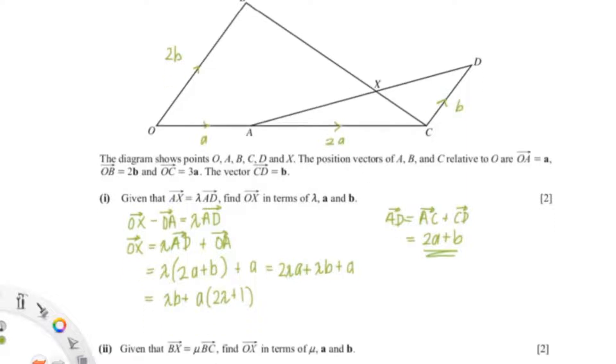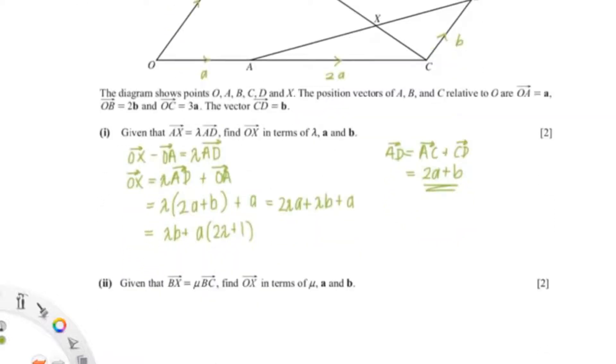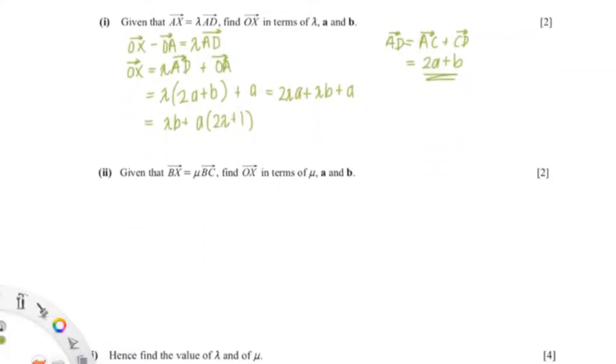Moving on to the next question. In this question it says given that BX equals to mu BC, find OX in terms of mu A and B. So again we can split BX to OX minus OB.